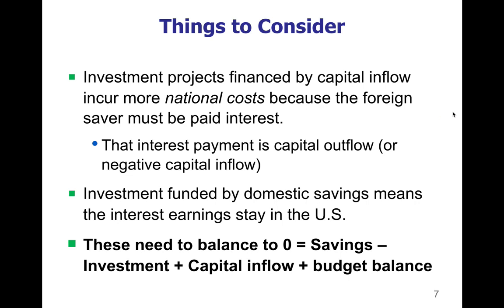To make all of this make sense, we're going to balance this equation — all of these things should equal zero. All of the savings in the United States minus the investment spending, add in the capital inflow coming into our system from foreign governments, and then add any budget balance by the U.S. government. If you add those things together, they should equal zero.